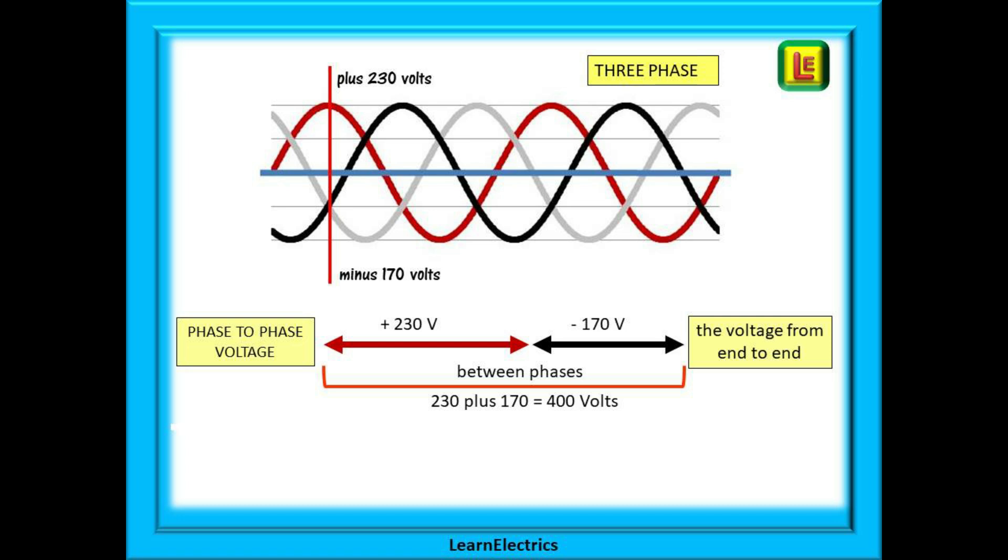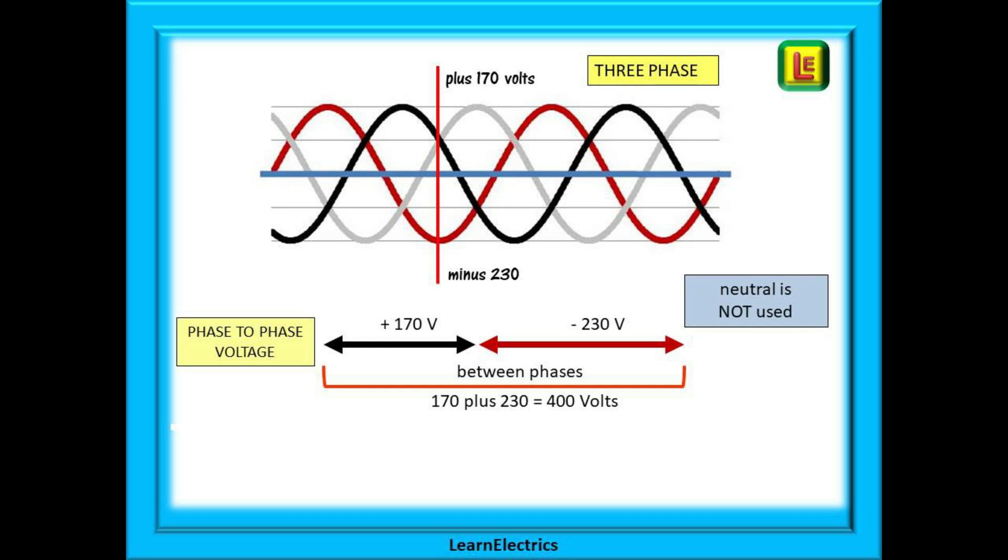The voltage can never exceed 400 volts nominal because we can never have two maximums at the same instant in time. And if we move on by half a cycle, the brown is now at a minimum negative and the black is in the positive. Draw the arrows as before and what do we have? 170 plus 230 which is 400 volts again. Any two phases will always have a maximum phase-to-phase voltage of 400 volts.